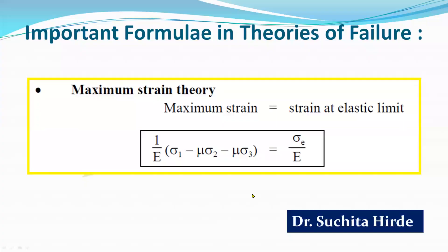Next is maximum principal strain theory, also called St. Venant's theory. In this, we calculate the maximum strain due to actual forces and equate it to the permissible strain. Permissible strain = σₑ/E and actual strain is expressed in terms of principal stresses. We equate these two to calculate the unknown quantities.